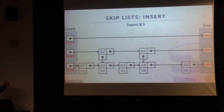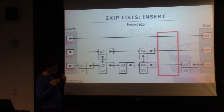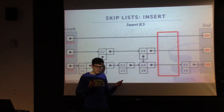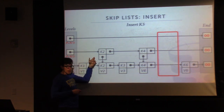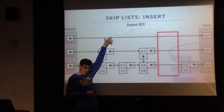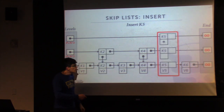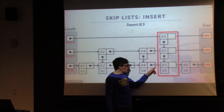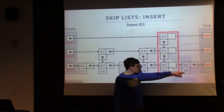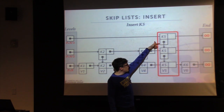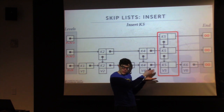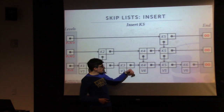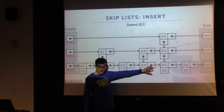Let's look at an example inserting key 5. First we figure out how many levels to add it at by flipping a coin — heads means add to level 2, heads again means add to level 3, tails means stop there. We put our entry in and in our tower, key 5 at level 3 points to key 5 at level 2, which points to level 1. At this point we've allocated all our memory for the new entry, but we haven't updated any pointers to tell everyone this thing exists. We update all the pointers bottom-up, and now anyone scanning will find our new entry.